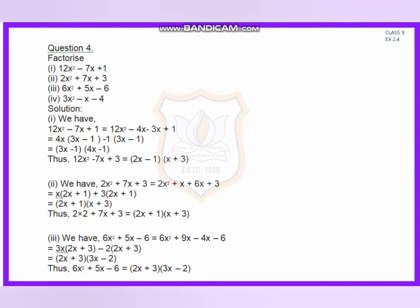Hello students, today we will continue our exercise to point 4. Question number 4: Factorize. Factorize means we have to find the value of x. First question: 12x squared minus 7x plus 1. We have to solve this question by splitting the middle term.